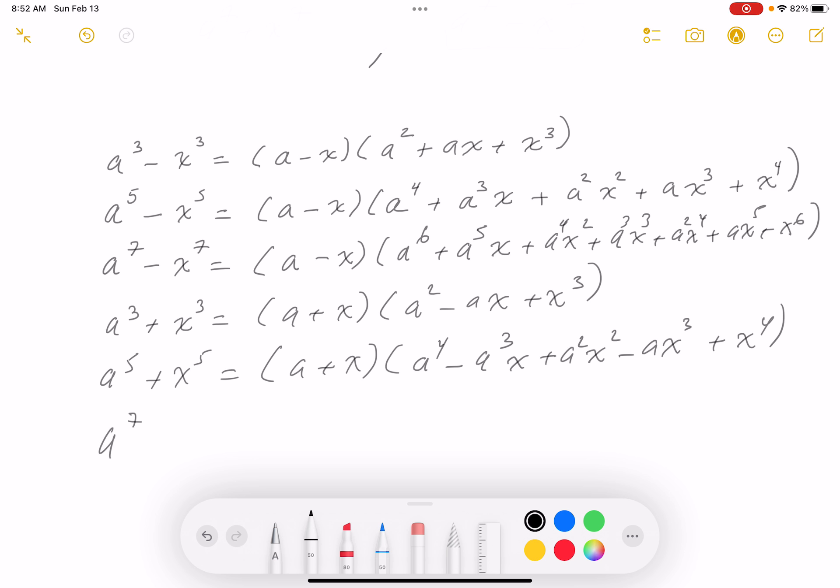And then you get a^7, odd powers, right? Plus x^7, a plus x. I know it's tedious. And that's going to be what? a^6 minus a^5x plus a^4x^2 minus a^3x^3 plus a^2x^4 minus ax^5 and then plus x^6. Let me just show you the patterns we're looking at over here. So, you know, minus, minus, minus, minus, minus, minus, plus, plus, plus, plus, plus, plus, plus. I'm seeing the pattern of the ax.